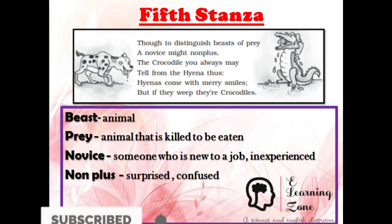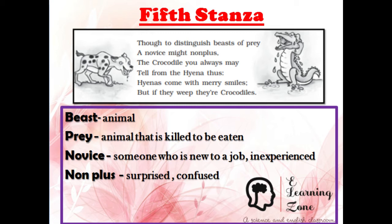This is the fifth stanza: 'Though to distinguish beasts of prey, a novice might non-plus, the Crocodile you always may tell from the Hyena thus — Hyenas come with merry smiles, but if they weep, they are Crocodiles.' The poet says that an inexperienced person would find it difficult to recognize animals that hunt others for food, as it is hard to distinguish between a Crocodile and a Hyena because of their deceptive appearances. The Hyena will be smiling and the Crocodile would shed tears before they hunt their prey.